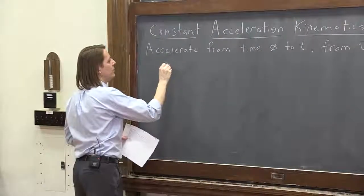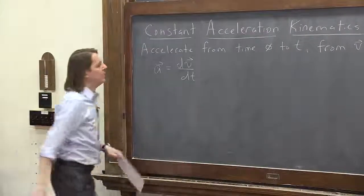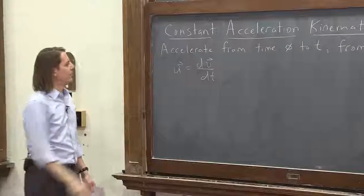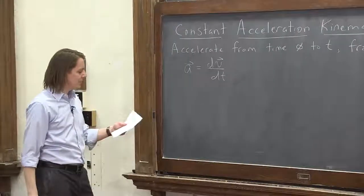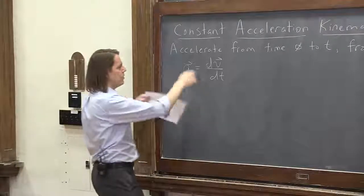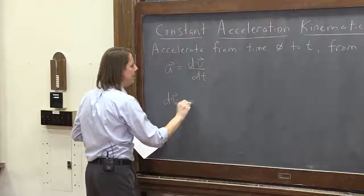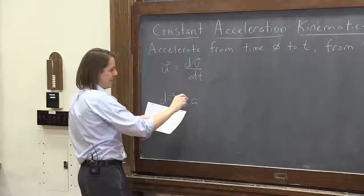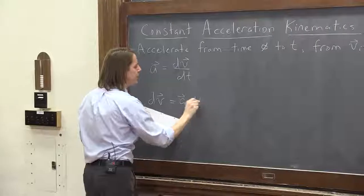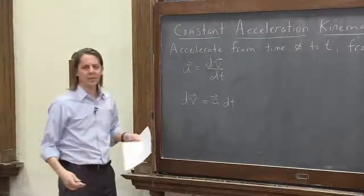It actually all starts with the instantaneous acceleration being the derivative of the instantaneous velocity. And then we just rearrange this. We bring the dt over here. And we say dv, the little differential change in velocity, is just the acceleration times whatever differential change in time you do. That's just the differential version of v equals at.